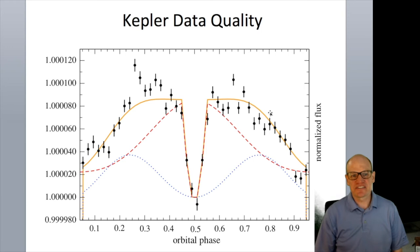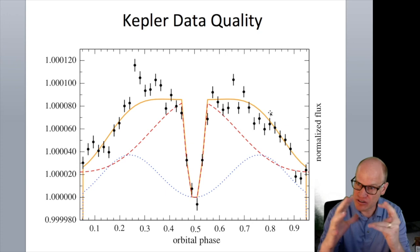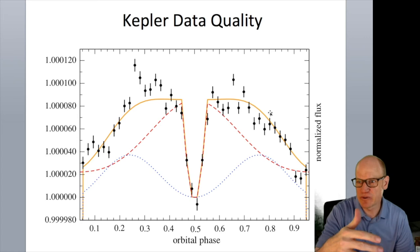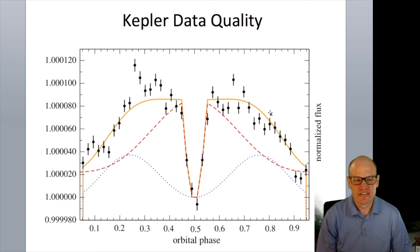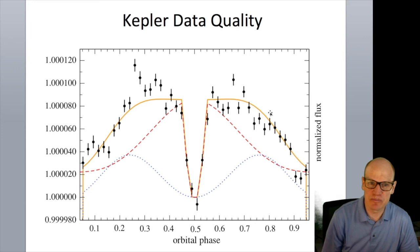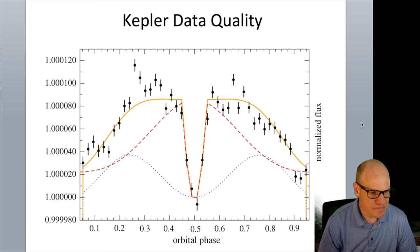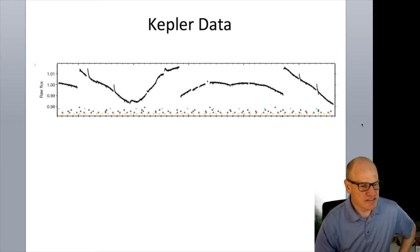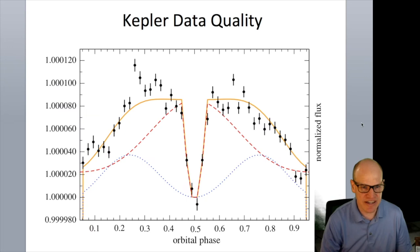The Kepler mission was so sensitive that it could measure stellar pulsations in stars a thousand light-years away at precision comparable to what we get for our own Sun. The data were that good.